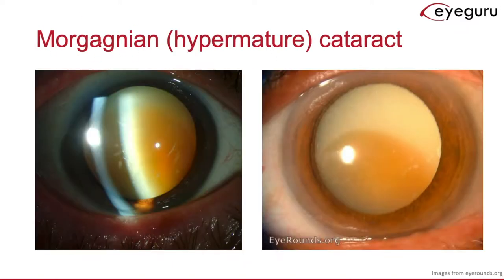A Morgagnian cataract is one that has crossed the state of maturity and become hypermature. The cortex in this case has liquefied, allowing the nucleus to actually fall down within the lens, and you can see the superior border of the nucleus.